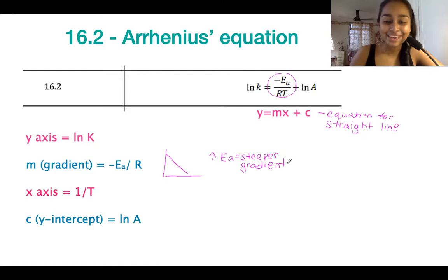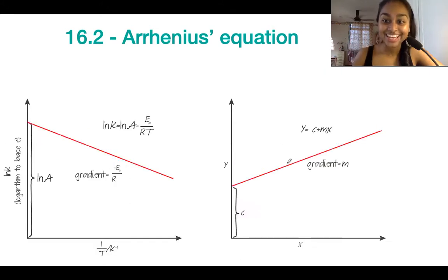So let's have a look at what this curve actually looks like then. So over here on your right, you've got your regular y equals mx plus c. And then over here on the left, this is kind of the outline of what it looks like when we graphed out the modified Arrhenius' equation. So you can see the gradient is negative Ea over R. Our axes are 1 over T against ln k and our y-intercept is going to be ln A.